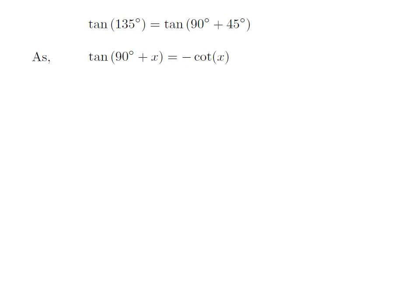As we know, the trigonometry identity tangent of 90 degree plus x is equal to minus cotangent of x.